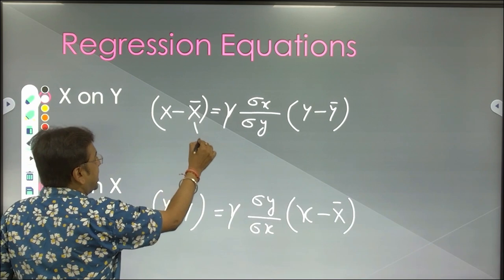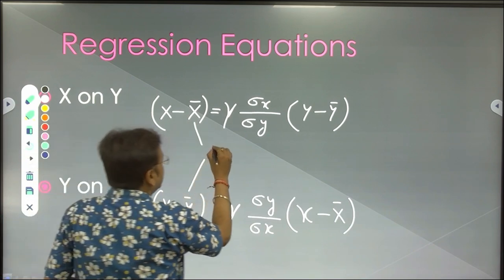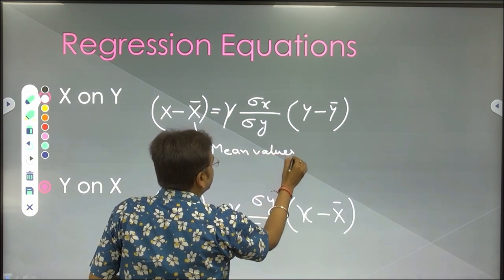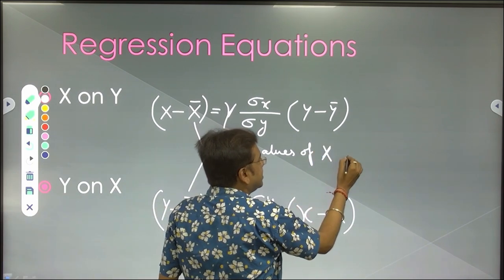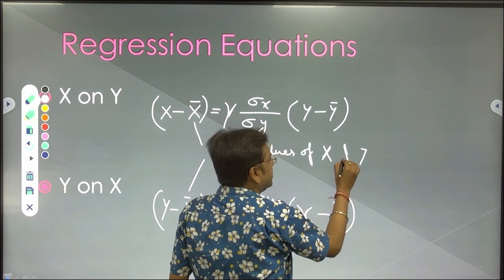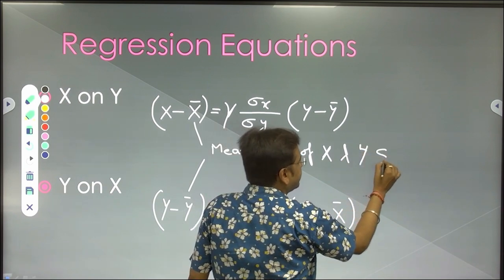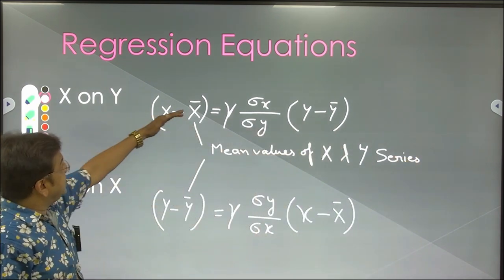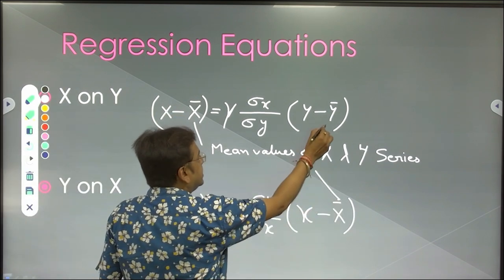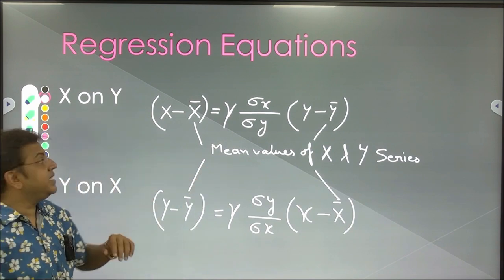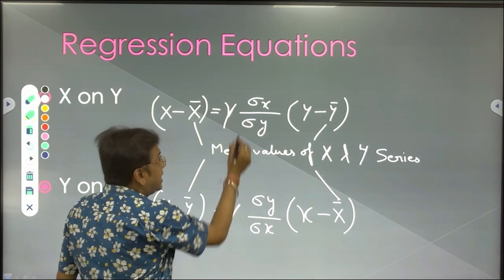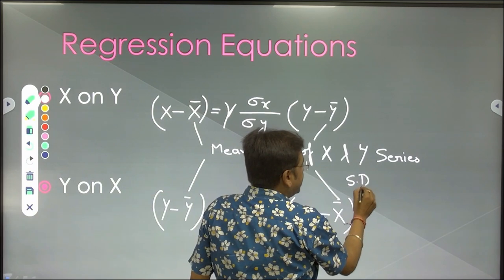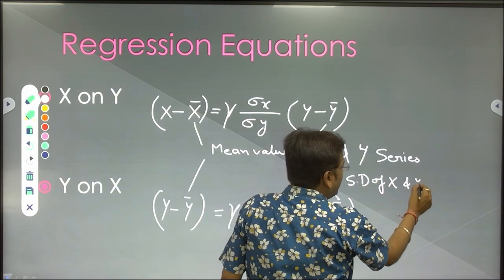x-bar and y-bar are the mean values of the x and y series. The standard deviation of x and standard deviation of y are known as the SD — standard deviation — of the x and y series.